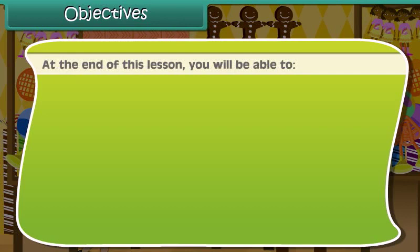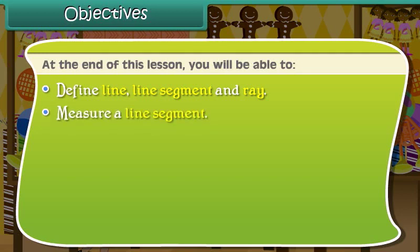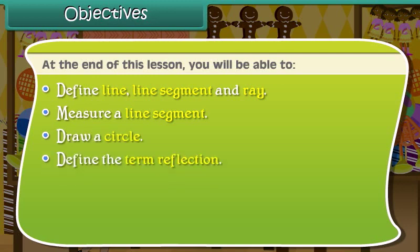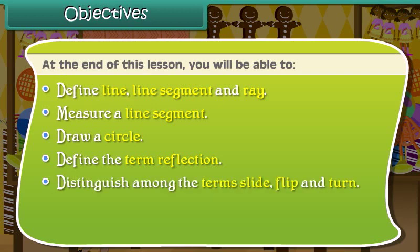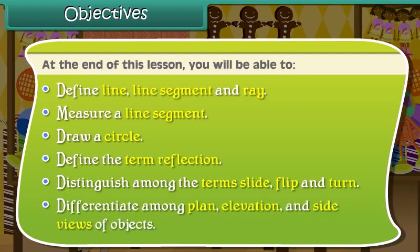At the end of this lesson you will be able to: define line, line segment, and ray; measure a line segment; draw a circle; define the term reflection; distinguish among the terms slide, flip, and turn; and differentiate among plan, elevation, and side views of objects.